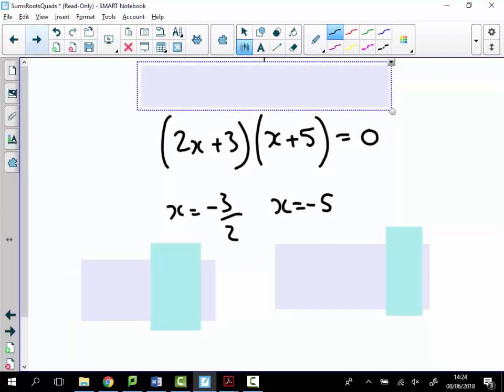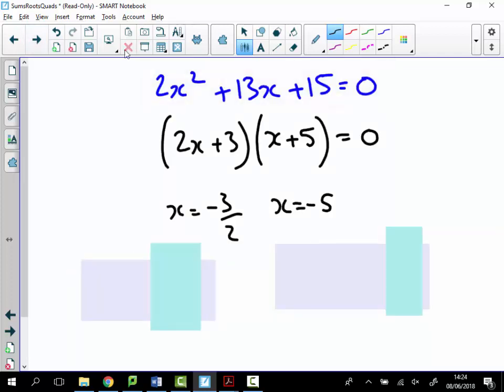What about if you've got stuff like that one? OK, are you happy with those being the roots, first of all? Are you happy that I've expanded out correctly? No. So the product of the roots is going to be? Seven and a half, do you think? Or 15 over 2? OK, 15 over 2. And the other one, if we add them together? Minus 6 and a half.